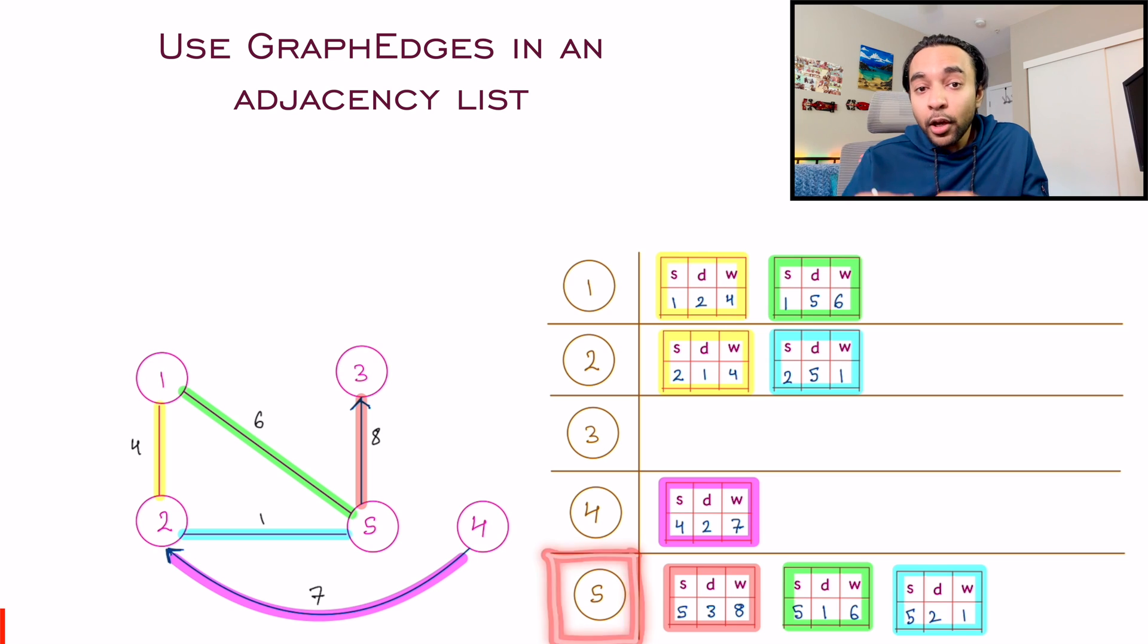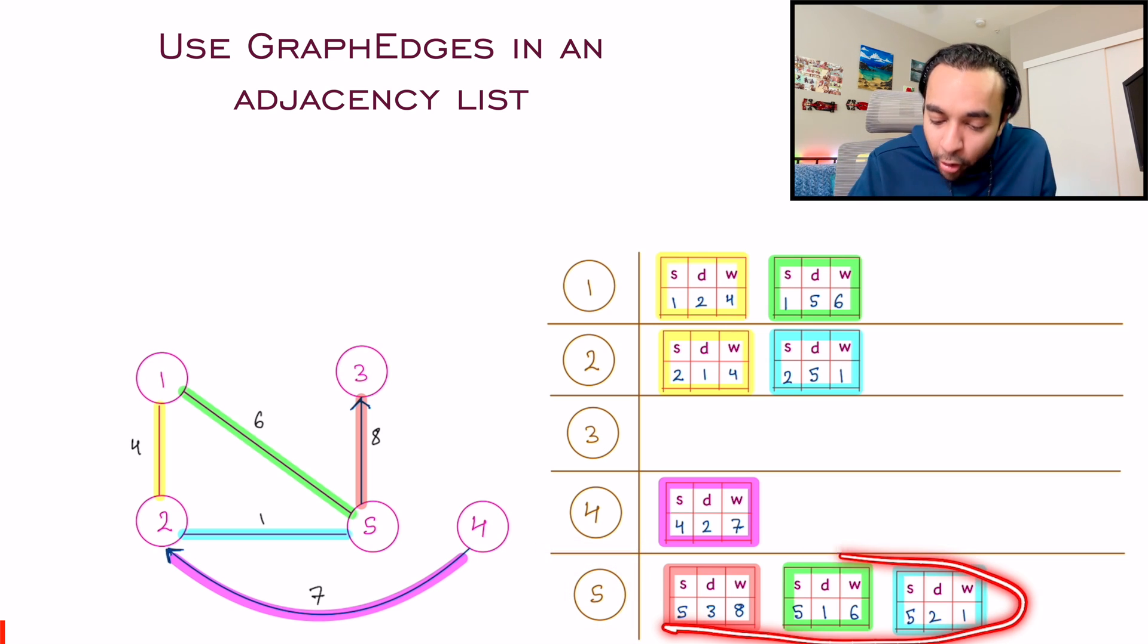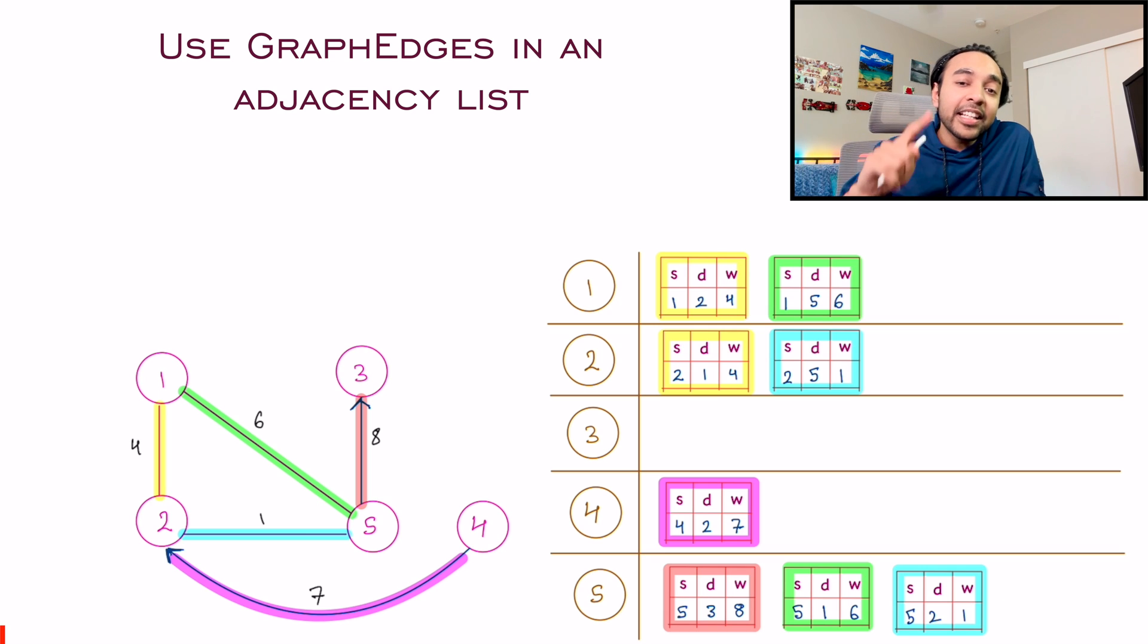So if you want to know that for node number five, what are the edges that I have, you can simply look at all of your objects in here, and that will give you all the details. So this kind of representation will help us with all of the future graph algorithms.